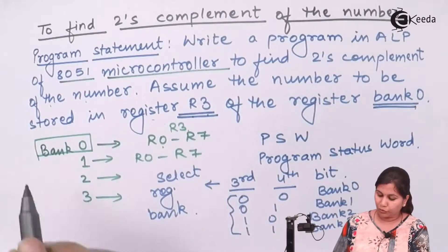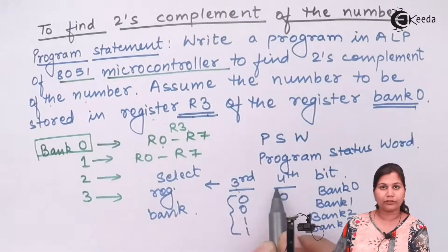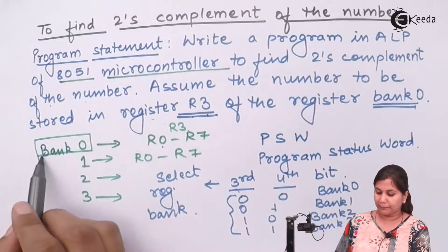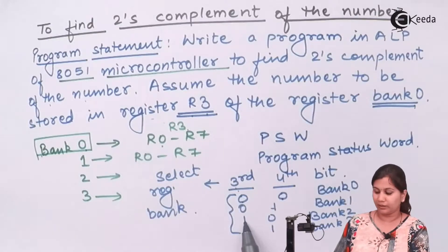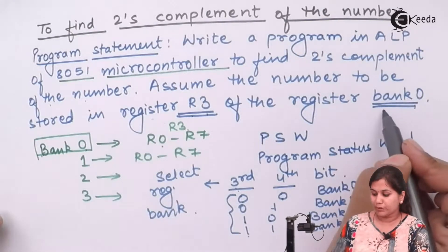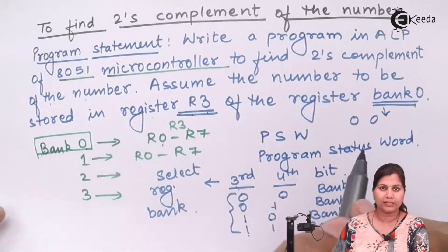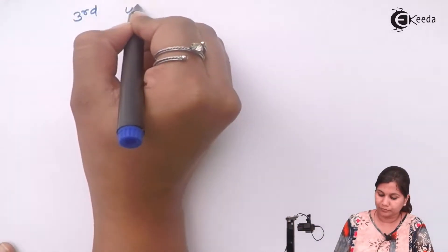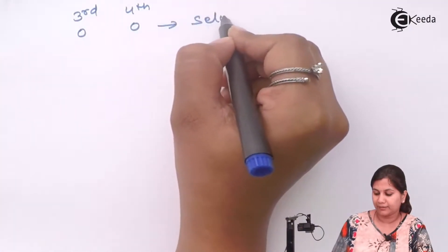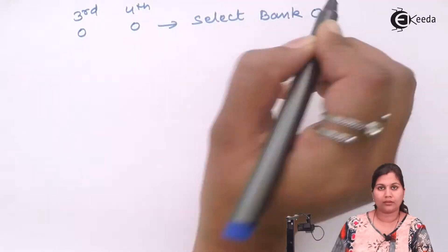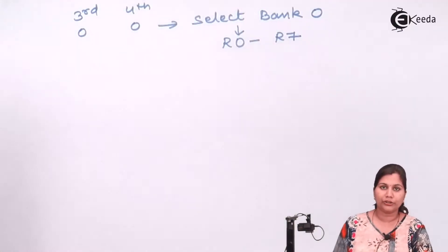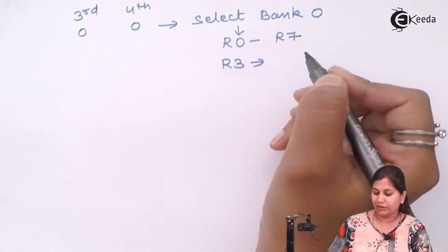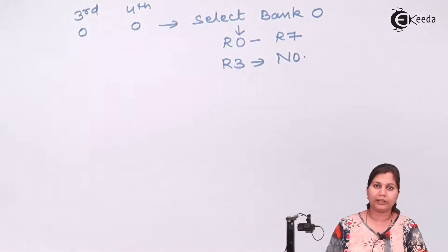So if we want to use any of these banks we have to set the third and fourth bit to the respective combination. To select bank 0, both bits must be 00. To use bank 2, third bit is 1 and fourth bit is 0. To use bank 3, both bits are 1. Since we want bank 0, both bits are 00. After bank 0 is selected, we can use any of the 8 registers R0 to R7, and we will use R3.